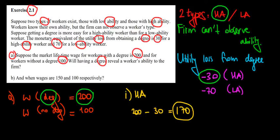170 dollars worth of utility is better than the 100 dollars of not getting a degree. So yes, it's worth getting the degree for the high ability workers. These ones will go for the degree.